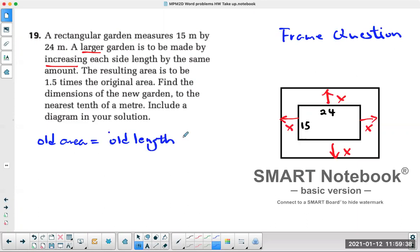In this case, the original is 24 times 15, which if you have a calculator you put it in, you get 360 meters squared. So that's the old area with the old length and the old width.